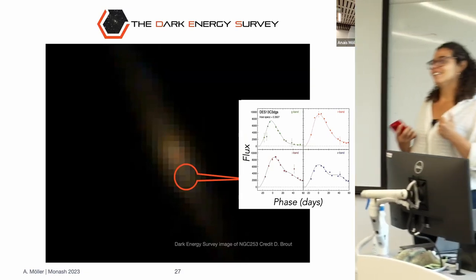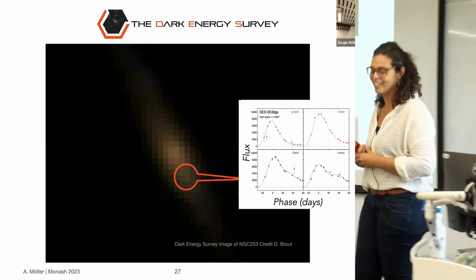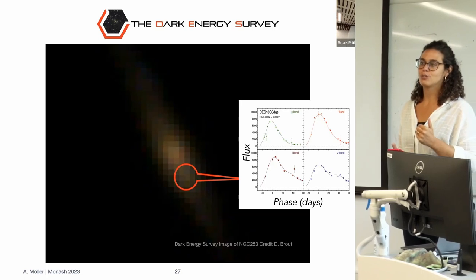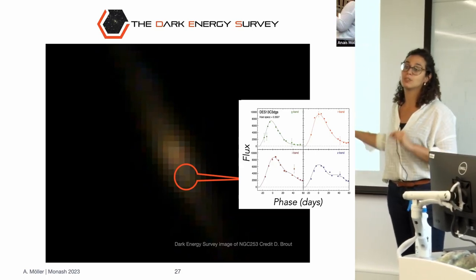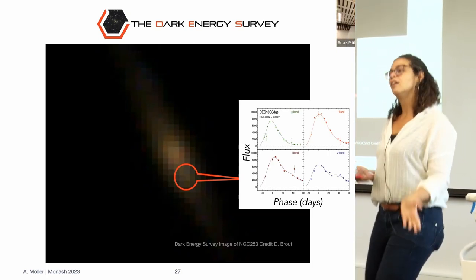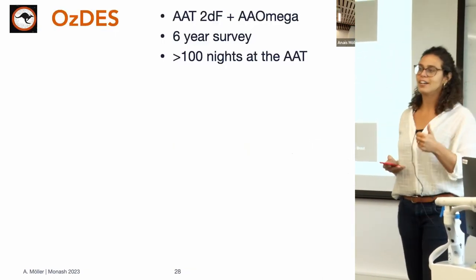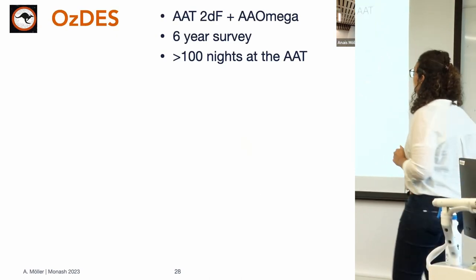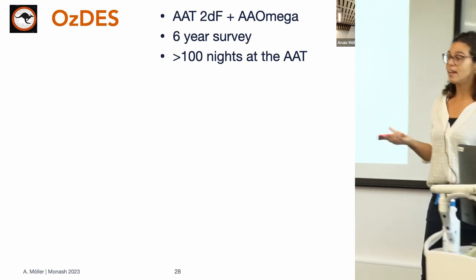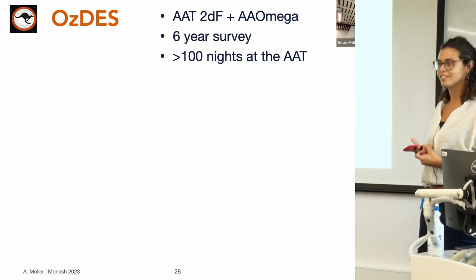Supernovae are not only Type Ia — there are core collapse supernovae and other types that we don't use for cosmology. We want to determine whether a supernova is Type Ia, and usually we follow them up spectroscopically around maximum light to determine the type. OzDES was the biggest provider of spectra for the Dark Energy Survey — we had more than 100 nights at the AAT for six years, which is a lot of time and a lot of fun. I love AAT and 2dF/AAOmega — a beautiful instrument.